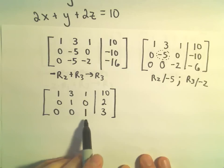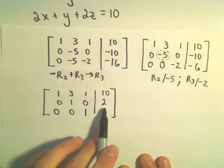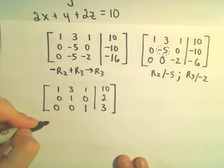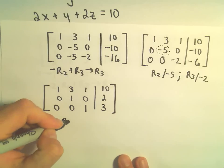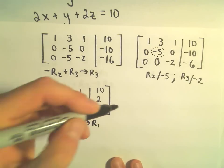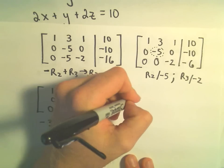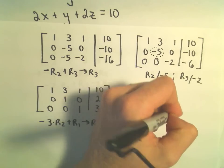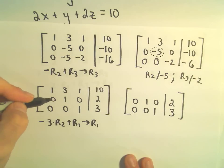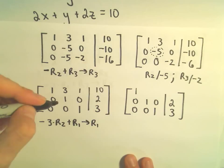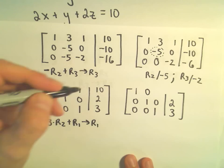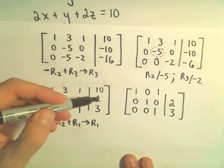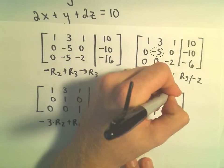We now know z equals 3 and y equals 2. But let's make the left side look like the identity. I'm going to take negative 3 times row 2 and add that to row 1 to get my new row 1. Row 2 (0, 1, 0, 2) and row 3 stay the same. For the new row 1: negative 3 times 0 plus 1 gives 1; negative 3 times 1 plus 3 gives 0; negative 3 times 0 plus 1 gives 1; negative 6 plus 10 gives positive 4.